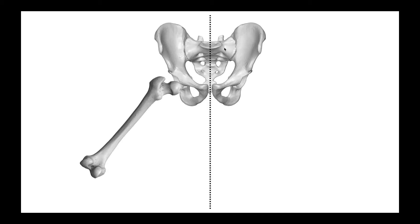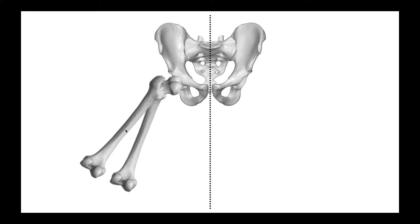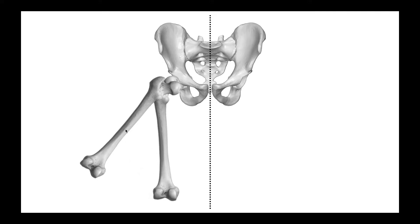Here's an anterior view of the pelvis. The femur is technically shown in a posterior view, but let's just go with it. In this case, the femur or the thigh starts out in an abducted state, meaning it's away from the midline of the body. When we undergo adduction, that brings the femur or the thigh toward the midline about the hip joint. So let's look at adduction to neutral.